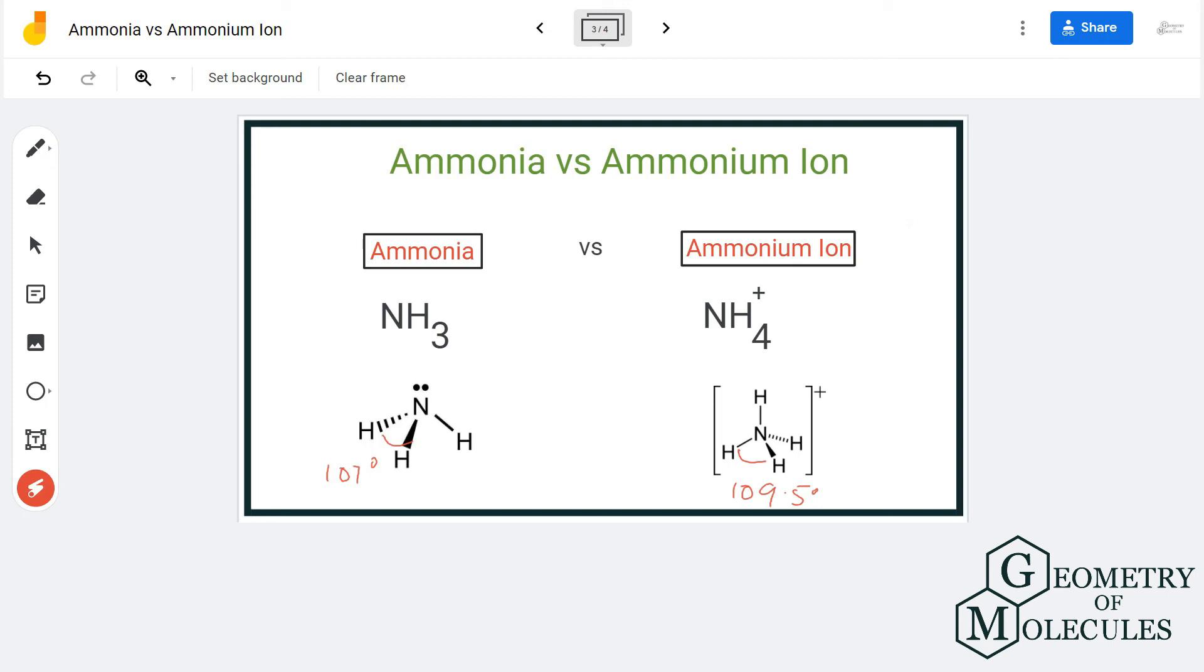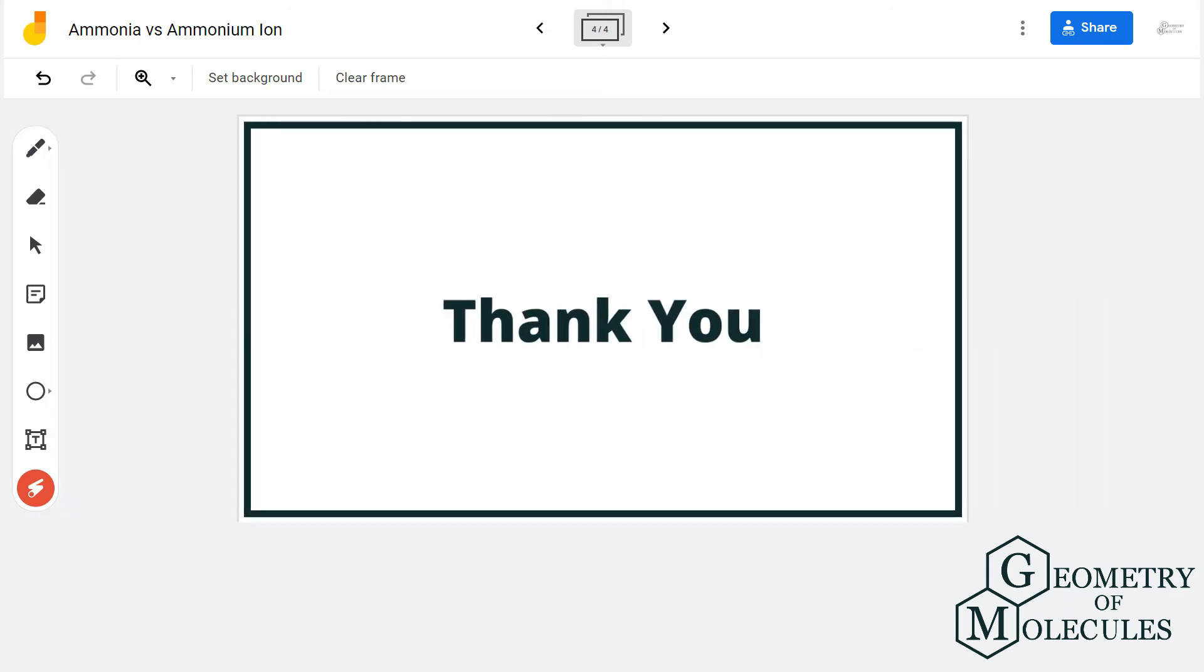able to find on its own. So these are some basic differences between ammonia and ammonium ion. And we forgot about one major difference—NH3 has a very strong odor, so you can identify this compound, whereas the ammonium ion is odorless. So I hope all these differences between these two compounds